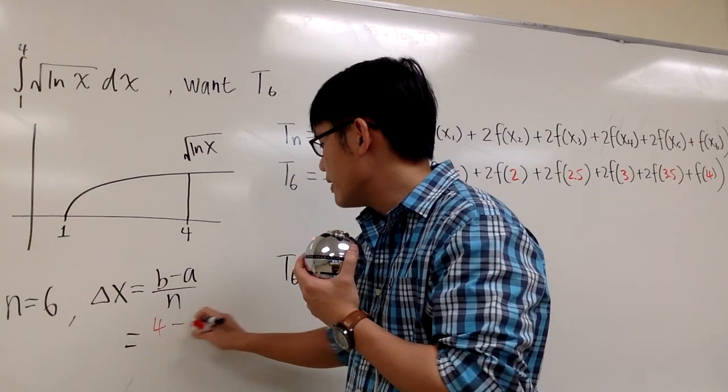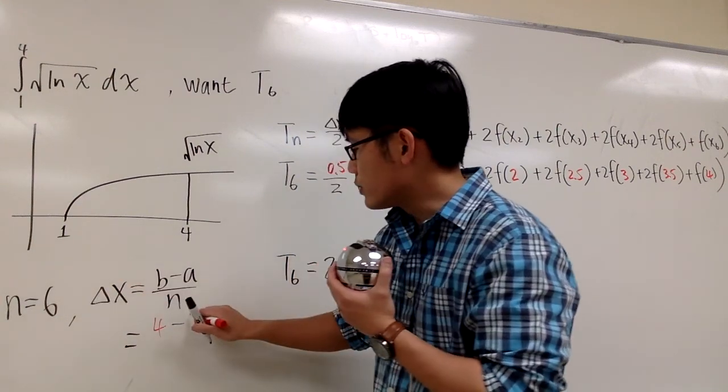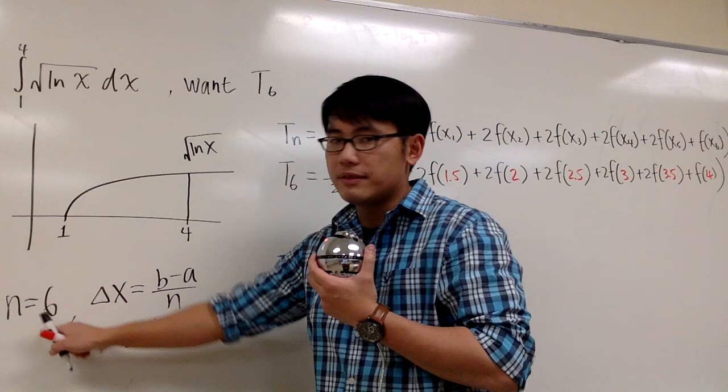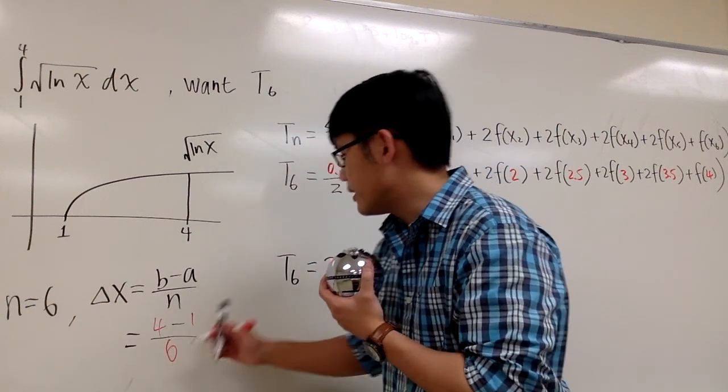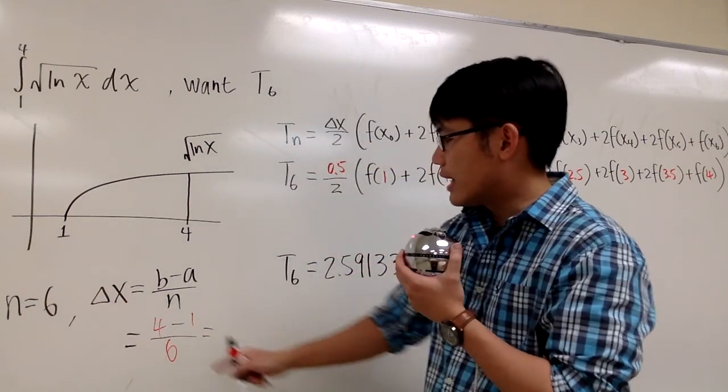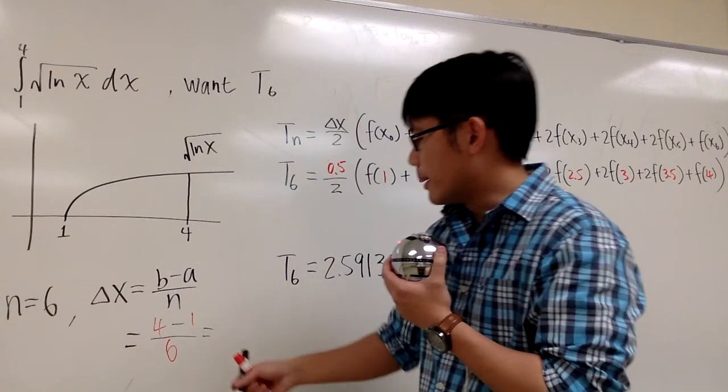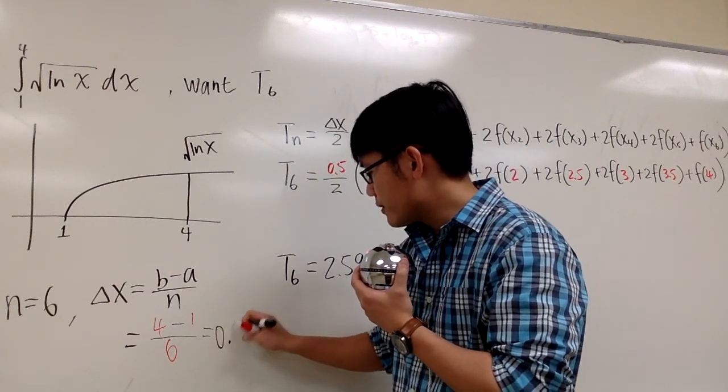Minus the a is the starting point, which is 1, divided by - we have six trapezoids, so we divide by n is 6. And work this out: 4 minus 1 is 3, 3 divided by 6 is 0.5.